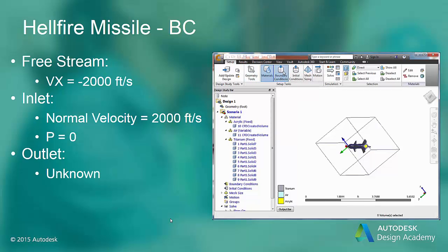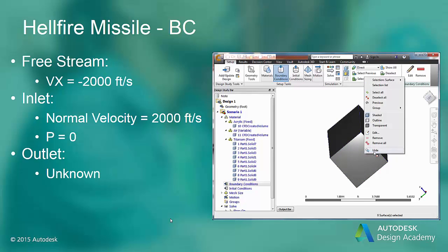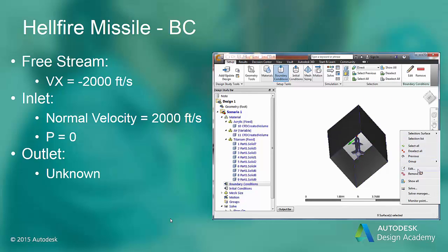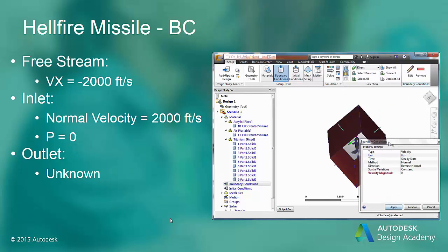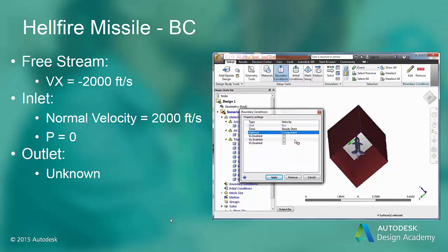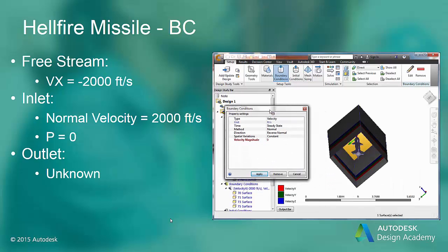For the freestream boundaries, we are going to assign the freestream velocity. We have to do this by component, since again the freestream direction is not normal to these surfaces. So we are going to set a value of 2000 feet per second. Notice we have to set it in the negative x direction. At the inlet, we are going to assign the velocity and pressure, just as we did in the last example. And at the outlet, we are going to assign the unknown condition.